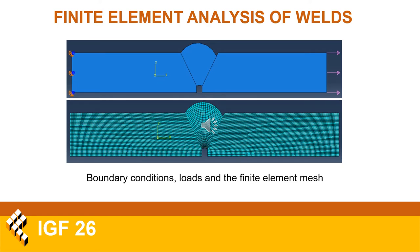The model for one of the defect combinations is shown here, with the boundary conditions and loads defined in the upper image. It was fixed on one end and subjected to a tensile load of 100 MPa on the opposite side in order to simulate the behavior in the future experiments. The finite element mesh is shown in the lower image and is made of hex finite elements. The size of the elements was determined after several iterations to confirm convergence of the results, with finer elements used in the regions of interest around the welded joint.